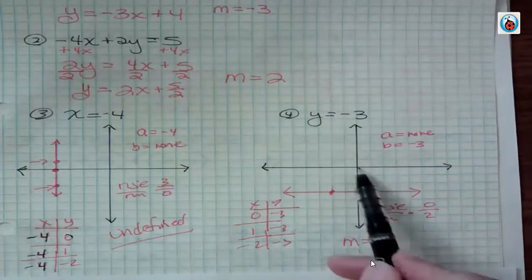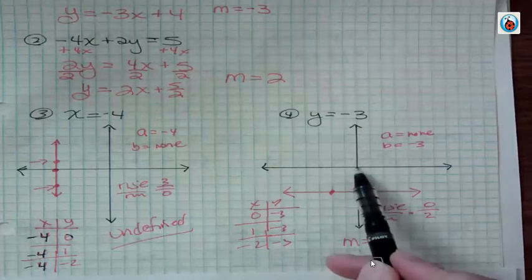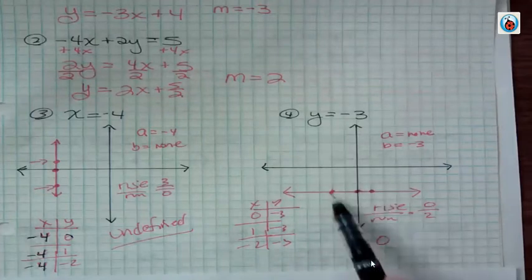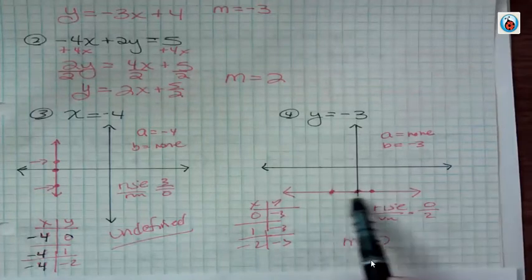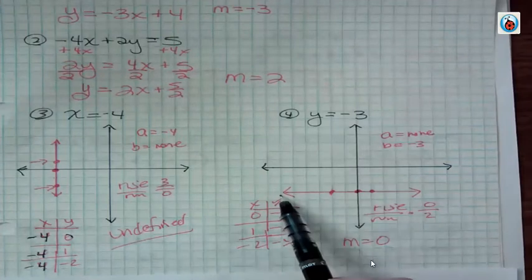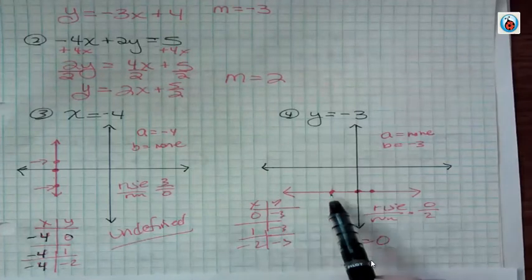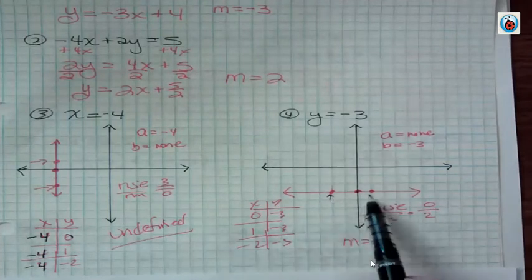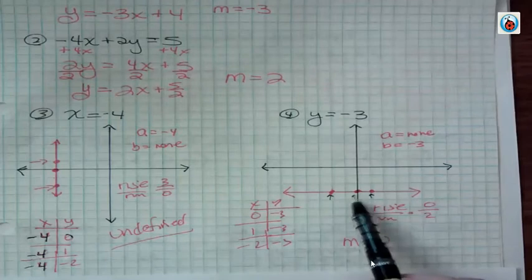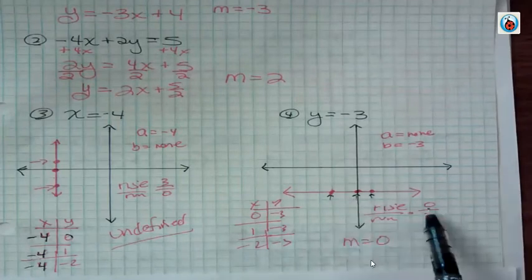If x is 1, y is negative 3. If x is negative 2, y is negative 3. And I end up with a horizontal line at negative 3. In this case, if you look from point to point, or whichever of these points we look at, we can see that there's no rise. The rise is 0.